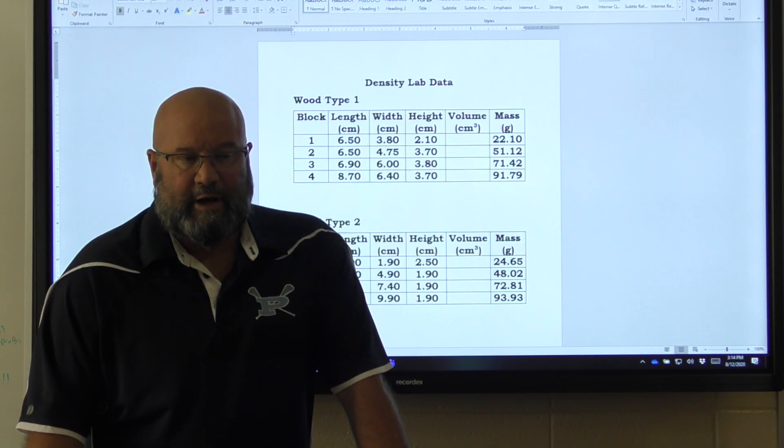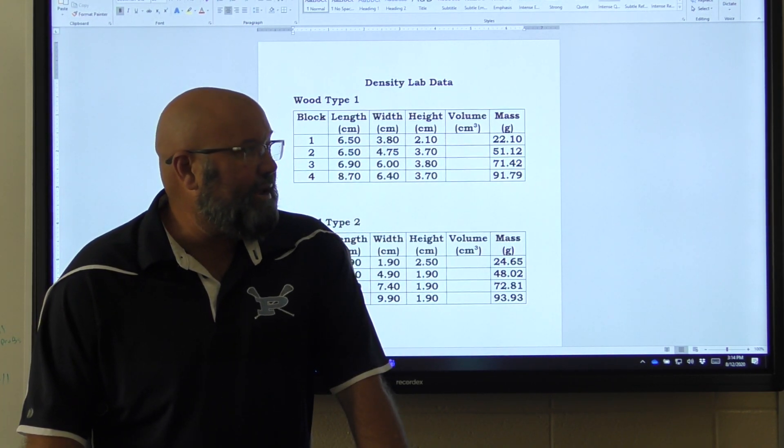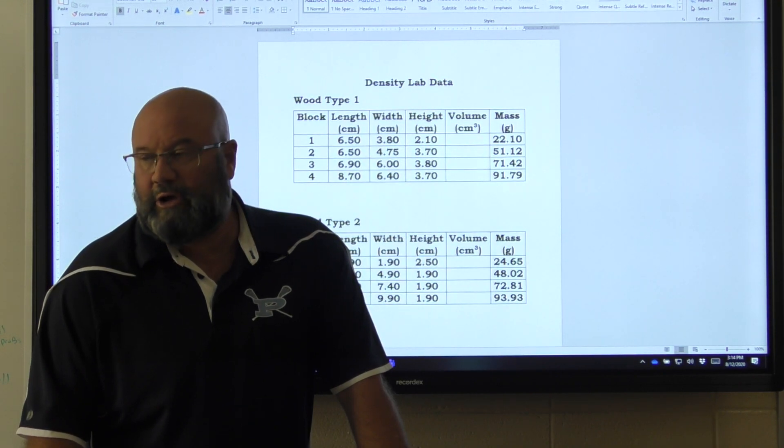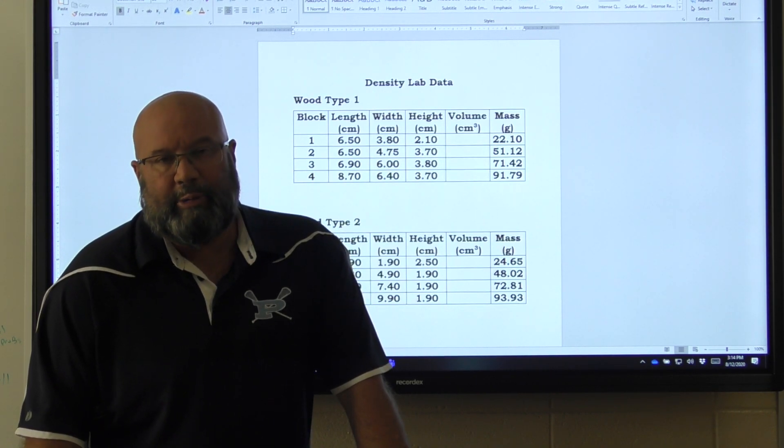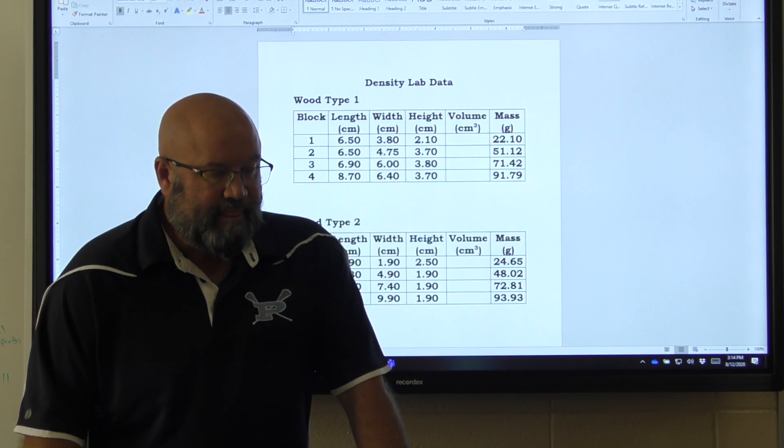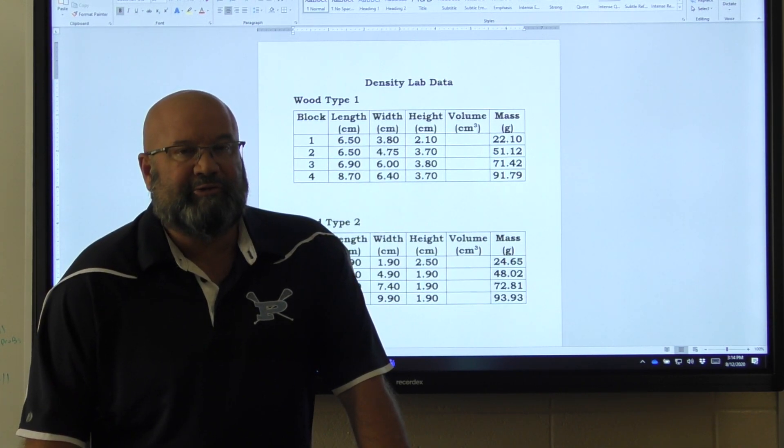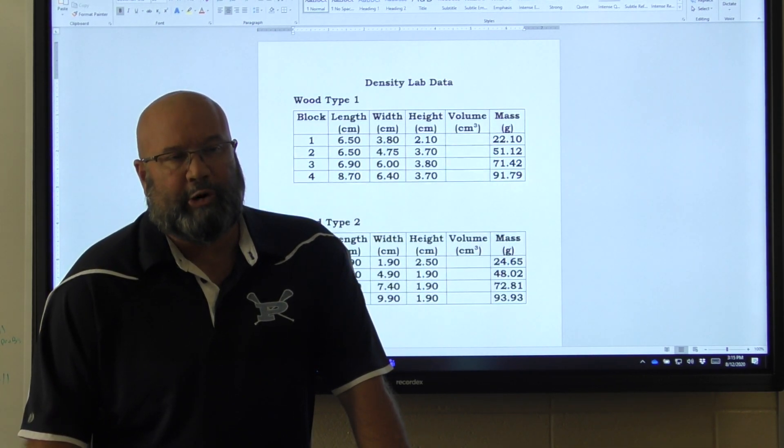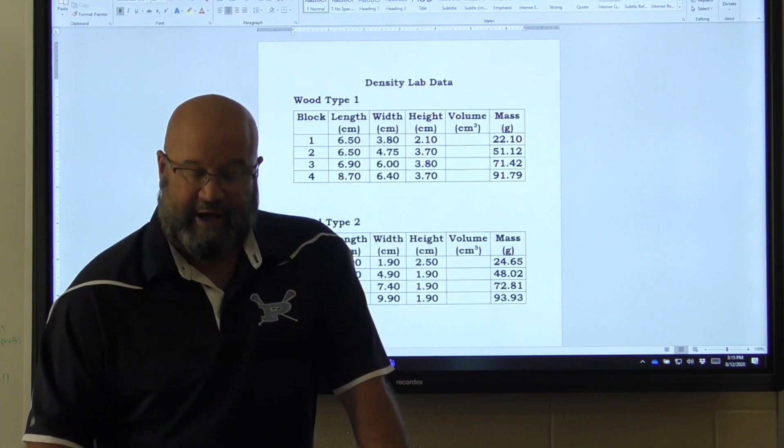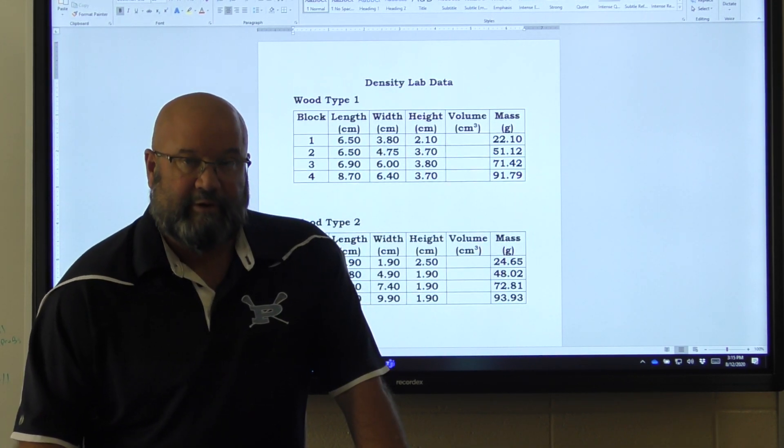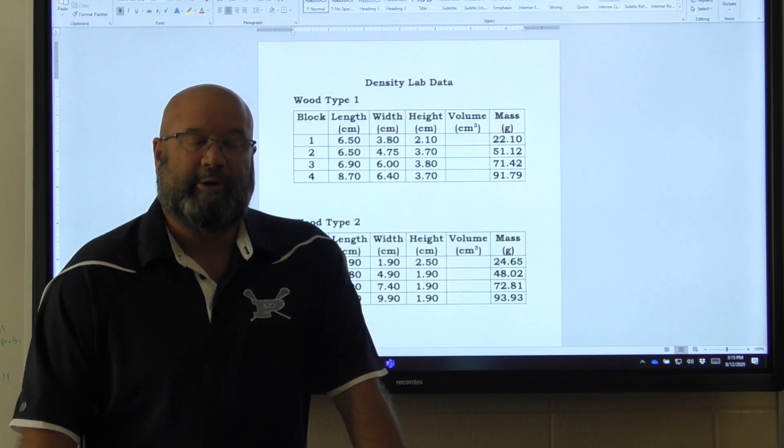Usually it's measured in standard units of kilograms per meter cubed, but a cubic meter would be a cube that's one meter by one meter by one meter, which would really be something too big to put in your hand or pick up. So it's also commonly measured in units of grams per centimeter cubed, which would be a cube that's one centimeter on a side.